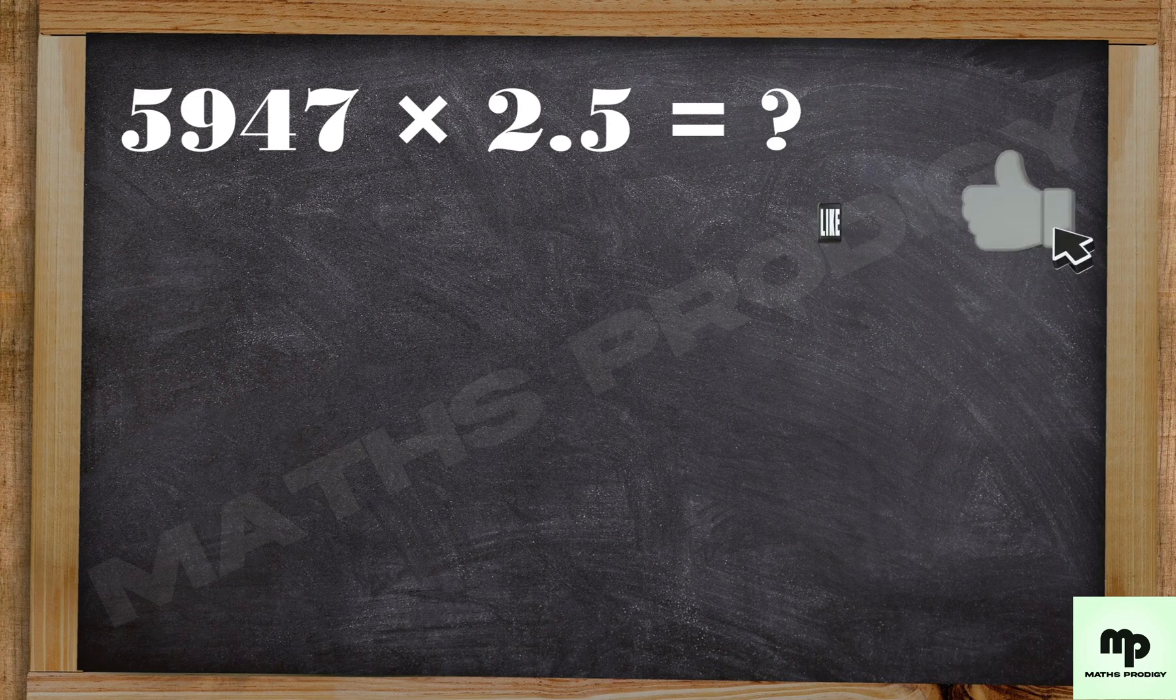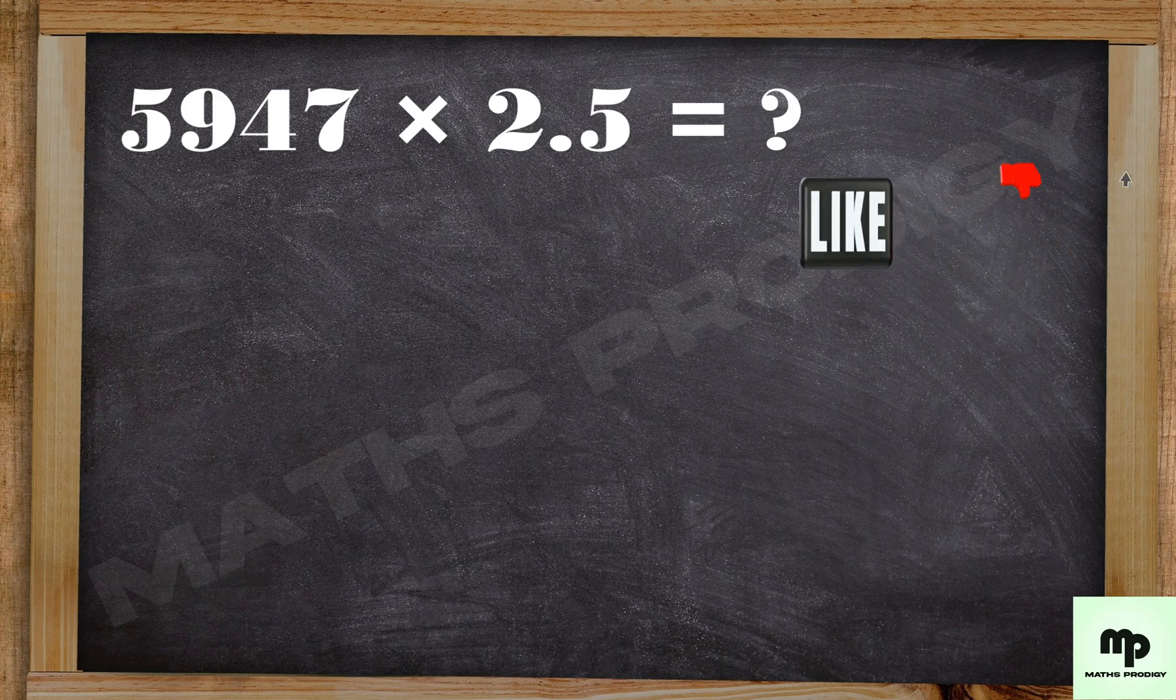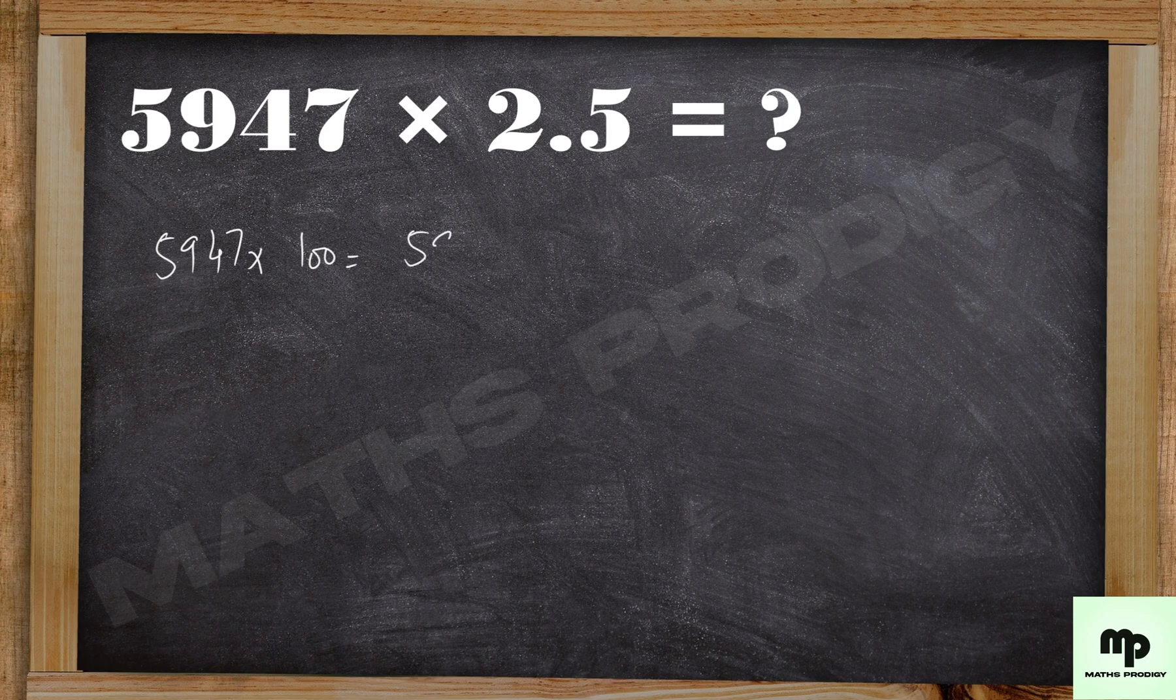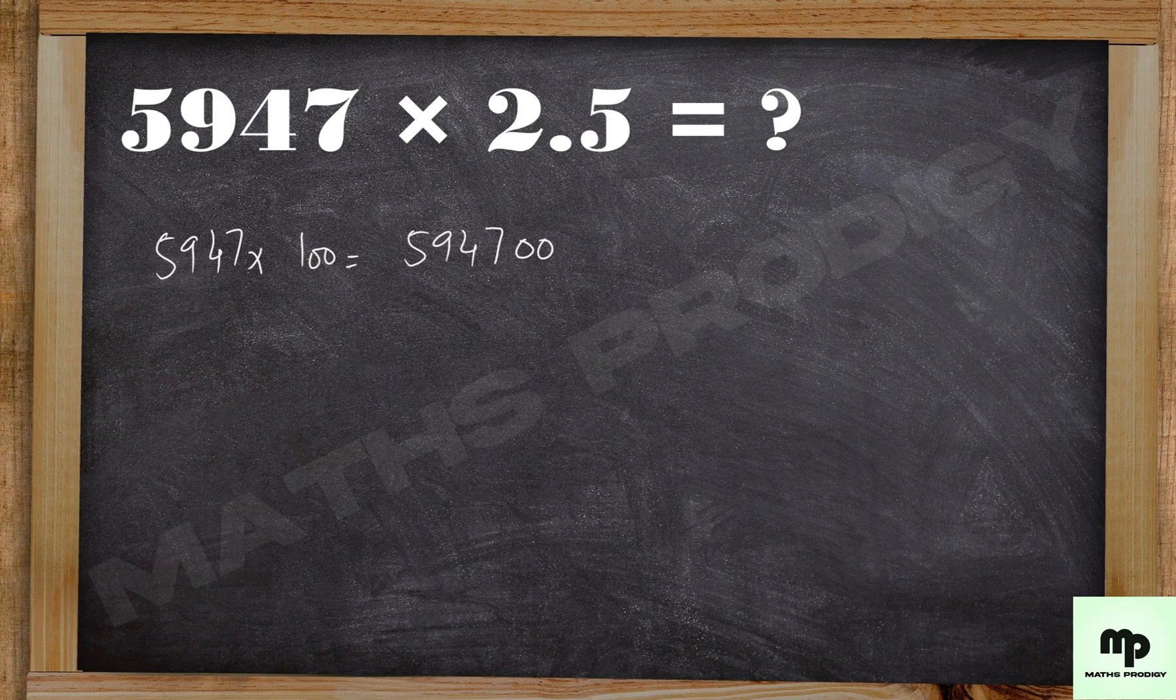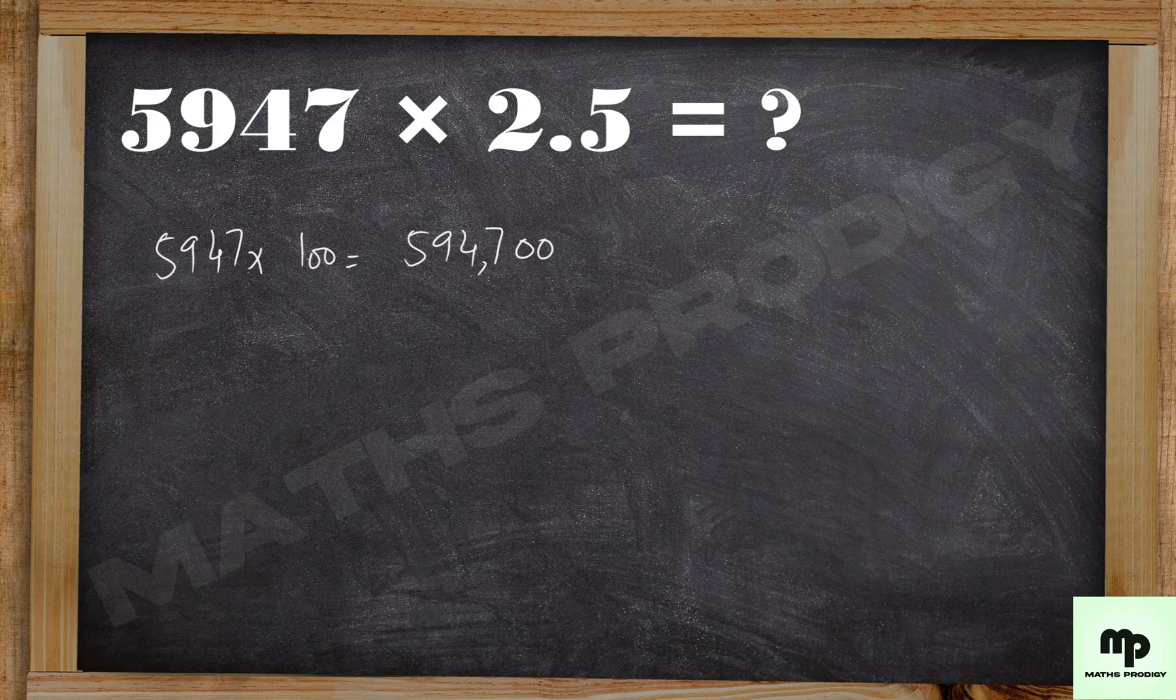If you have to multiply 5947 by 2.5, simply what you do is take this number and multiply it by 100, which is way easier. You know when you multiply by hundreds, you just put the zeros in the end. It's 594700.